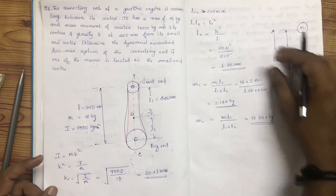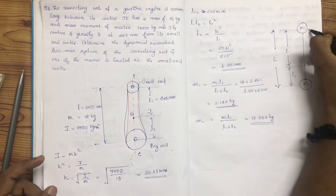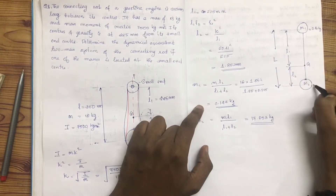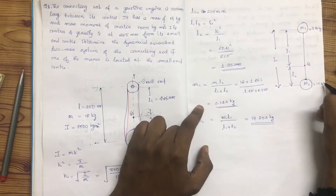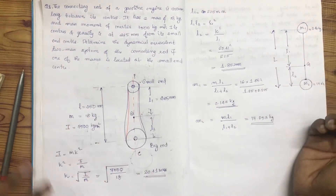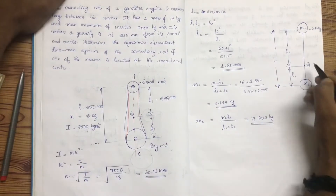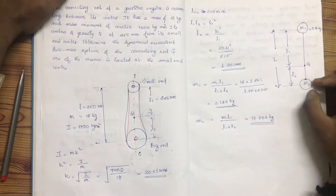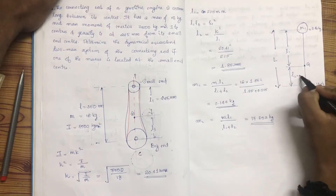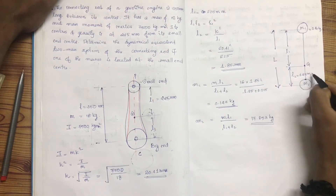M1 is equal to 0.14 kg and M2 is equal to 17.8 kg. The G distance is 0.85 mm.